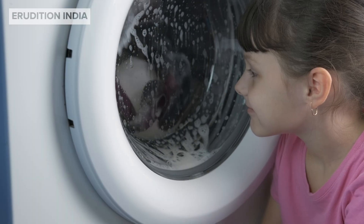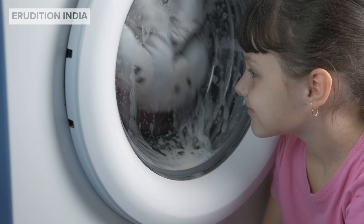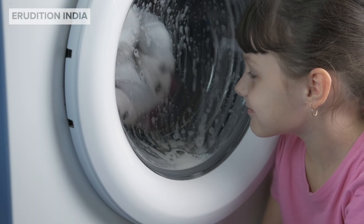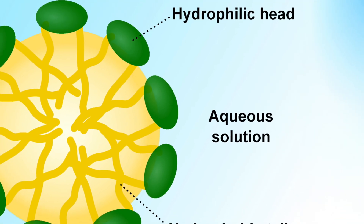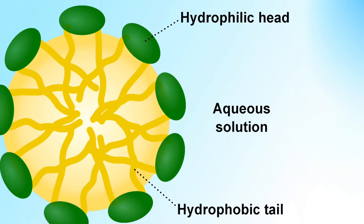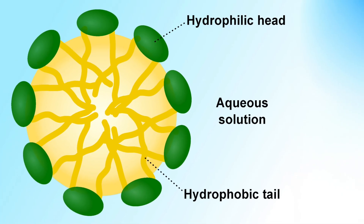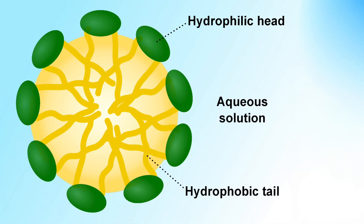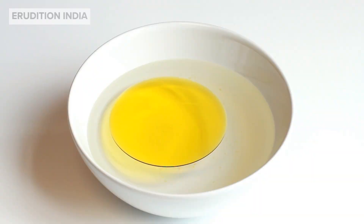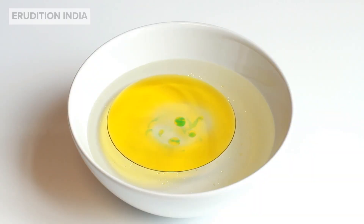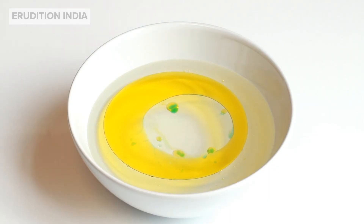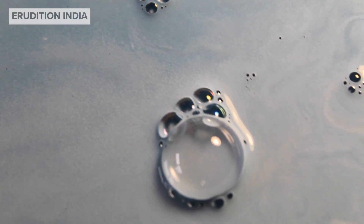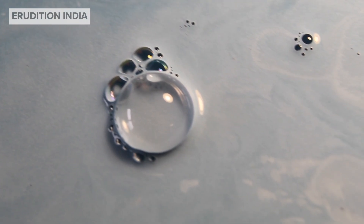When a dirty cloth is put in water containing dissolved soap, the hydrocarbon ends of the soap molecules in the micelle attach to the oil or grease particles present on the surface of the dirty cloth. In this way, the soap micelle entraps the oily or greasy particle by using its hydrocarbon ends.